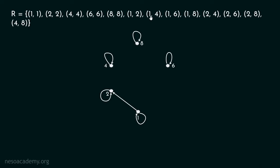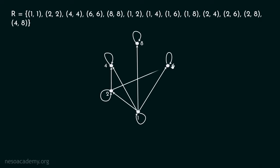We must draw an edge from 1 to 4, with the arrow pointing to vertex 4. Apart from this, we draw edges from 1 to 6, 1 to 8. Then 2 to 4, because 2 divides 4. Then 2 to 6, 2 to 8, and 4 to 8. This is our relation R represented using a directed graph.